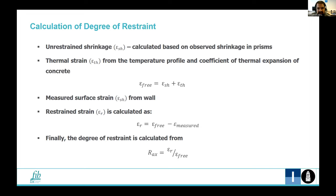The measured surface strain which we get from the wall is represented by epsilon measured. By subtracting that from the free strain, we calculate the restrained strain in the wall. The degree of restraint, which is expressed as a ratio between the restrained strain and free strain, is then calculated as shown here for different parts along the height and length of the wall.